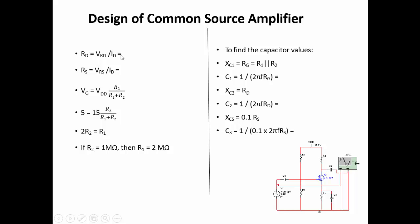Rd is found using Vrd divided by Id, and Rs is found using Vrs divided by Id. Since the gate current is 0 for the MOSFET, we can assume the drain current equals the source current. Vg is calculated using the voltage divider rule: Vg equals VDD multiplied by R2 divided by (R1 plus R2). From this relation, 2 times R2 equals R1.